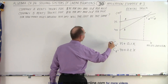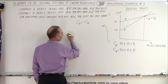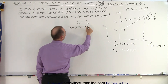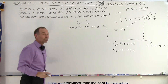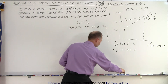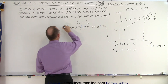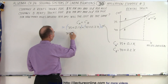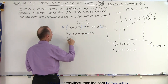We're going to set the cost for A equal to the cost for B: 75 plus 0.1x equals 40 plus 0.2x. To get rid of the decimals, we multiply both sides of the equation by 10, giving us 750 plus x equals 400 plus 2x.